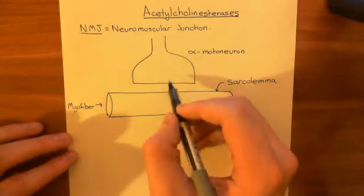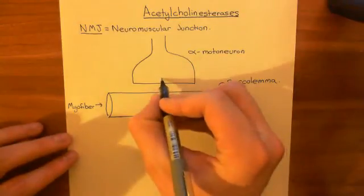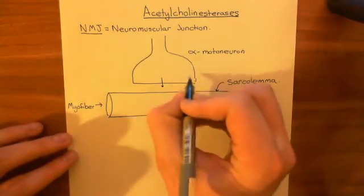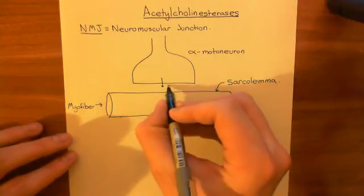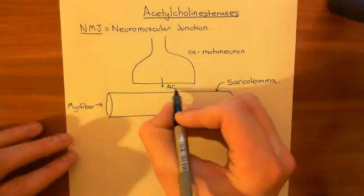Right, so the way this works is that the presynaptic neuron, the alpha motor neuron, when an action potential arrives in this alpha motor neuron, it's going to trigger this alpha motor neuron to release acetylcholine.